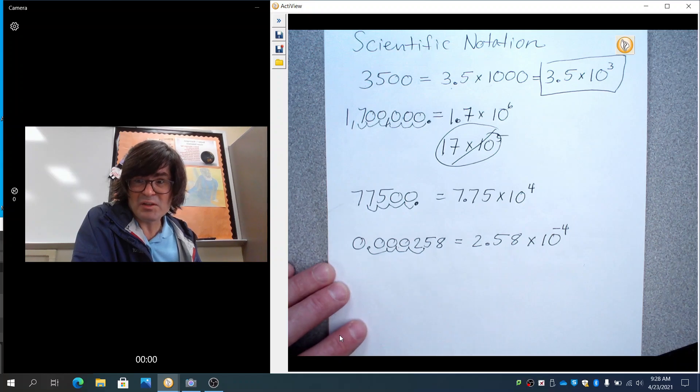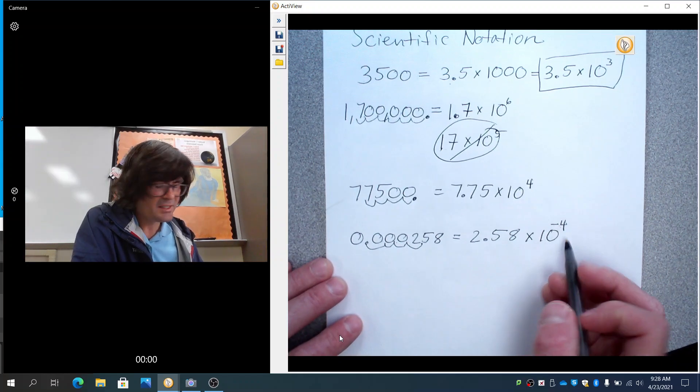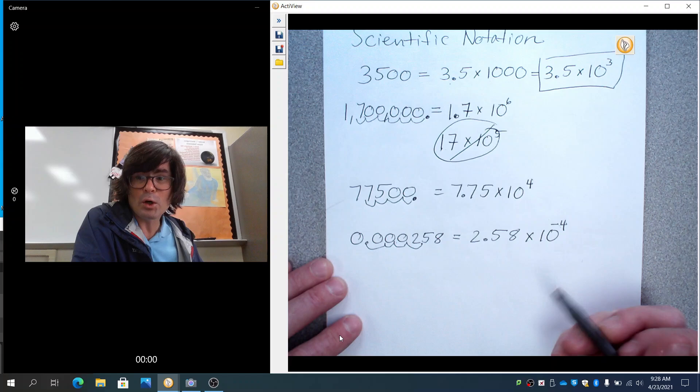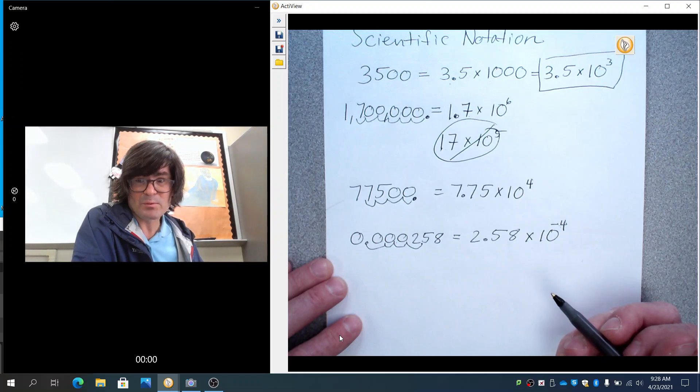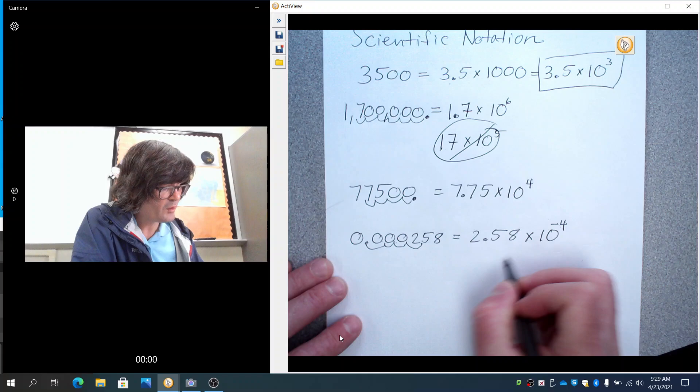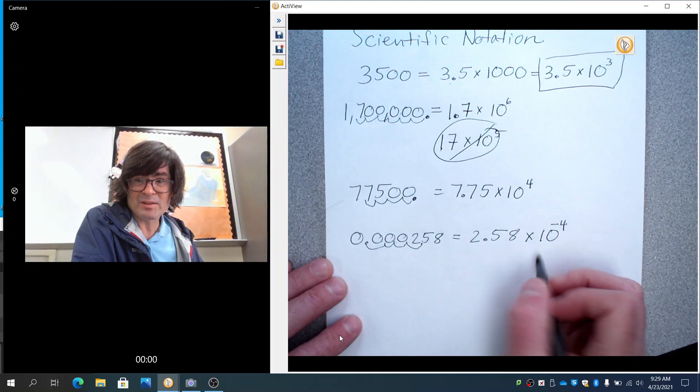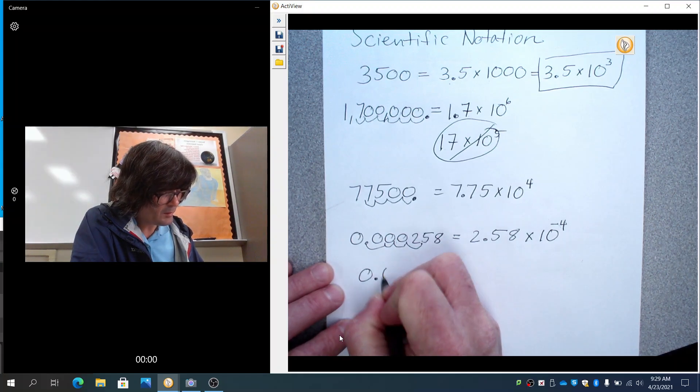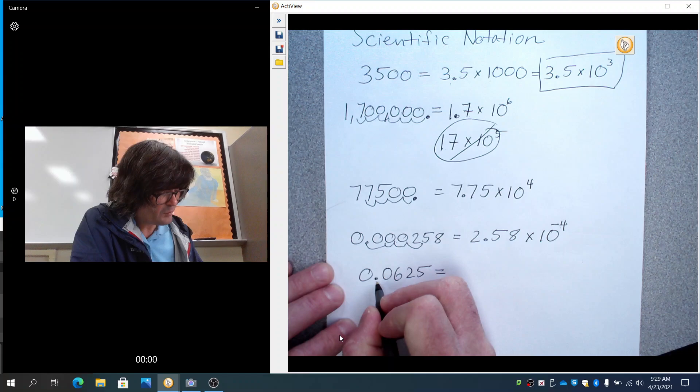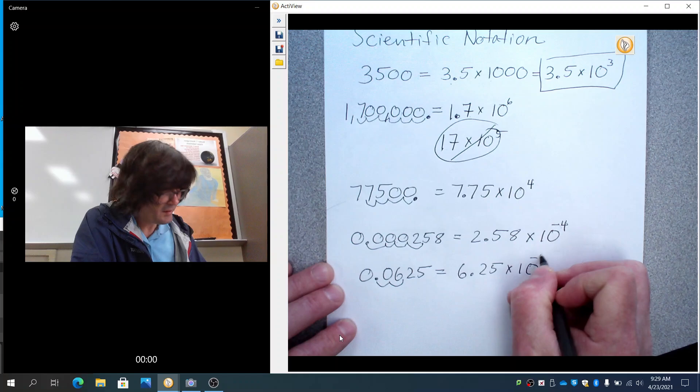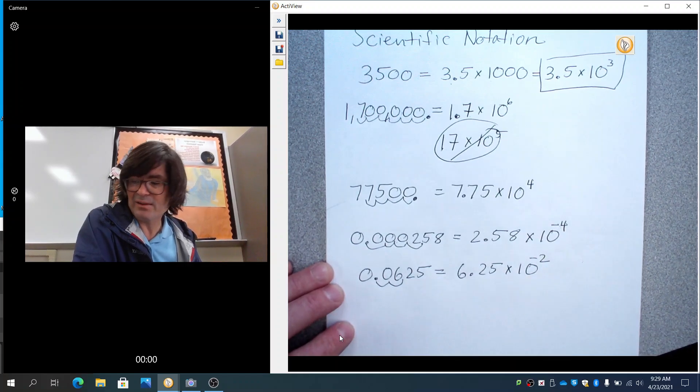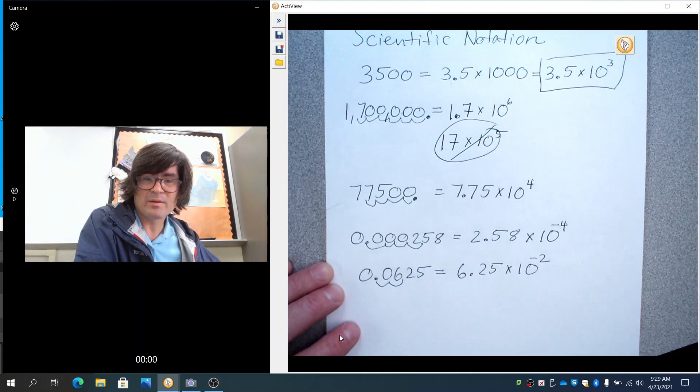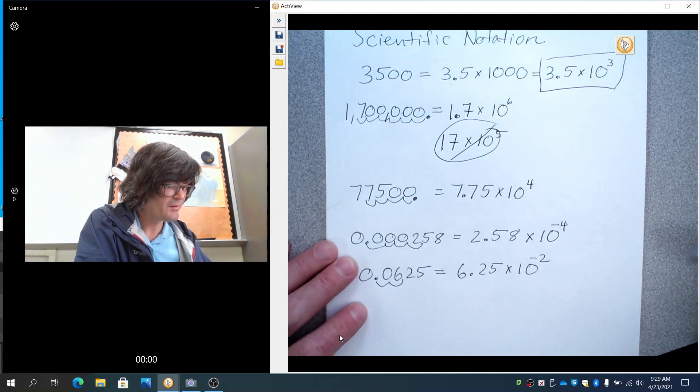When you have a very small number, the exponent is going to be negative because 10 to the negative fourth is actually 1 over 10 to the fourth, which is a really small number. 1 over a big number makes a small number. If you had .0625, that would move over 2 spots. That would be 6.25 times 10 to the negative 2. So that's just how scientific notation moves back and forth from a number to the scientific notation.